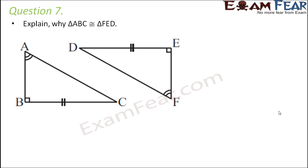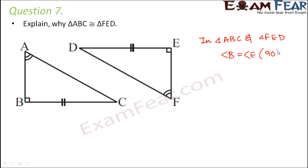Question number 7: Explain why triangle ABC is congruent to triangle FED. Let's match the conditions given in the two triangles. It is given that angle B is equal to angle E because both are 90 degrees. It is also given that angle A is equal to angle F. So we have been given two angles, and one side which is BC is equal to DE. Do you think it would be congruent by ASA? No, because the side BC is not included by these two angles.